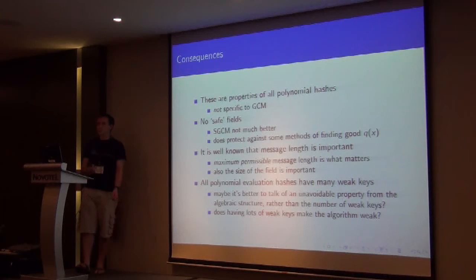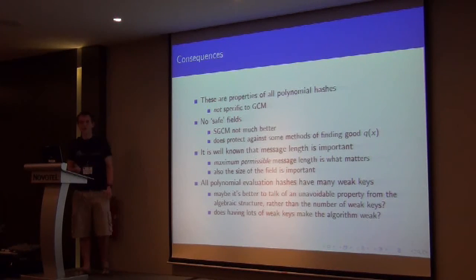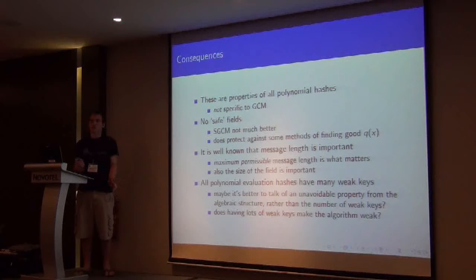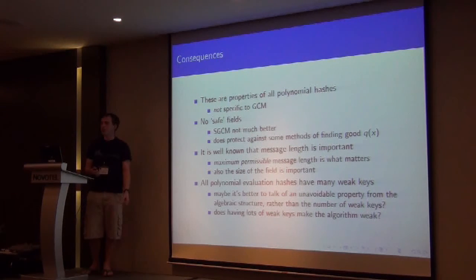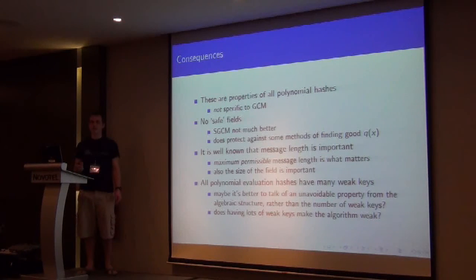What does this mean? Well, these are properties of all polynomial hashes. It's not something specific to GCM. And there aren't any safe fields. So at no point have I said anything particularly relating to the field that you choose. So safe prime domain counter mode isn't much better in this respect than GCM. But it does protect against some of the nice methods of just writing down good q of x's. So there's a few more details about that in the paper.